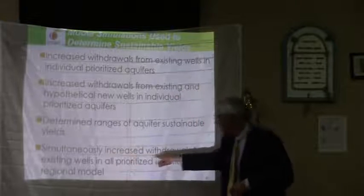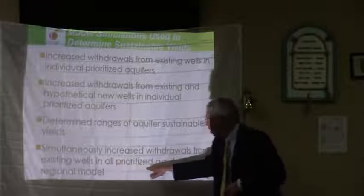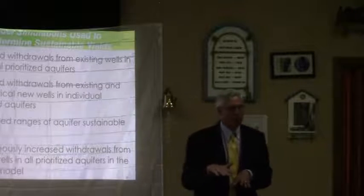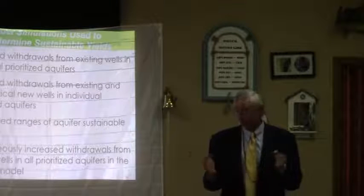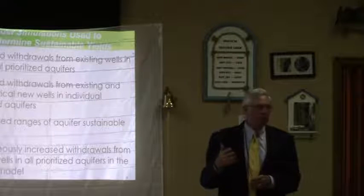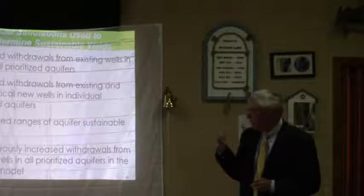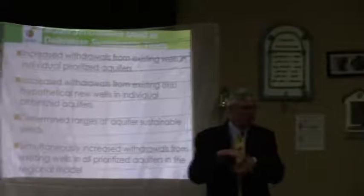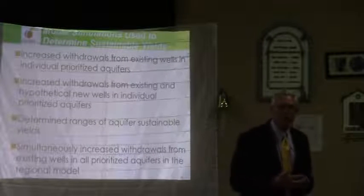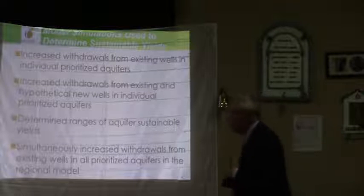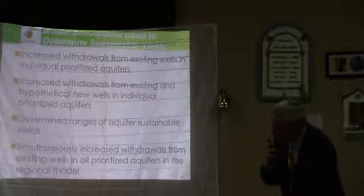Then we simultaneously increased withdrawals from existing wells in all prioritized aquifers in the regional model. One important finding was that the aquifers are interconnected. If you pump the Cretaceous aquifer, which is the deepest, you get drawdown in the Cretaceous, but you also get some drawdown in the overlying Paleocene and overlying Floridian aquifers. So pumping from the Cretaceous does affect water levels in all other aquifers. We increased each aquifer individually, then increased all aquifers together to see how that changed sustainable yield — and there was a slight but measurable difference.